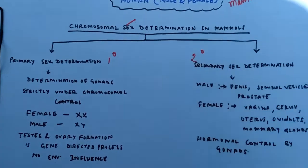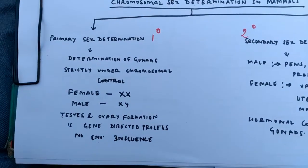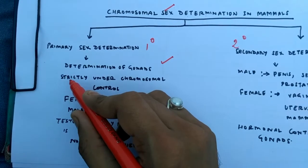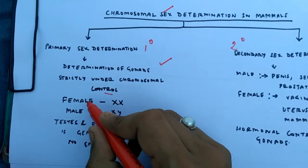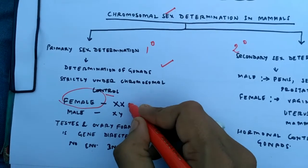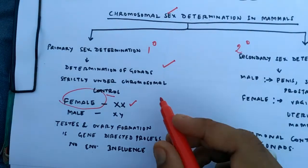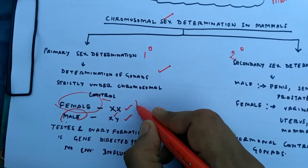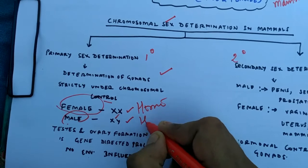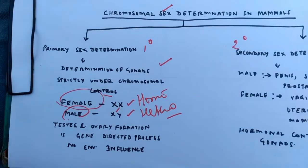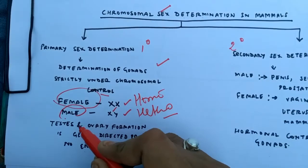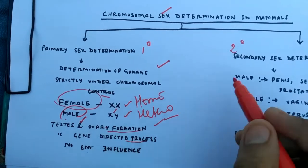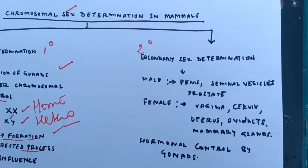The determination of sex occurs in two steps: first is primary sex determination, and second is secondary sex determination. Primary sex determination is the determination of the gonad, and it is strictly under the control of chromosomes. In females the genotype is XX, and in males it is XY — one homomorphic and one heteromorphic type. Primary sex determination involves differentiation and formation of the gonads directly under the control of genes, not the environment.